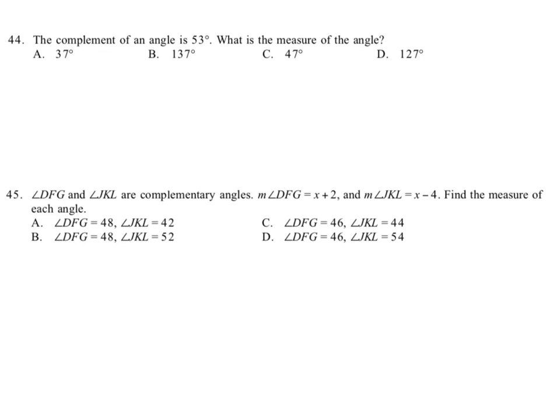Okay, 44, the complement of an angle is 53 degrees. Remember, complement, as you can see here, there's a single P, right? That's not the twice as many as the double P supplement. Complement is only 90 degrees.